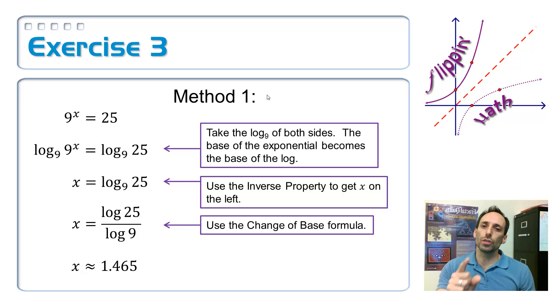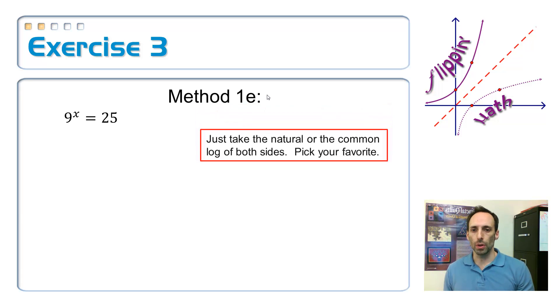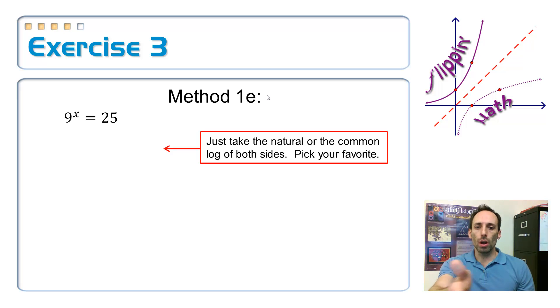Here is a modified version of that first method. Instead of taking the log base 9 of both sides, just take whatever log that you want. Since you already have on your calculator base e or base 10, why don't you just take the log of one of those? Pick your favorite. So, take the natural log or the common log of both sides. Pick your favorite, and I usually choose the natural log.